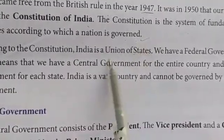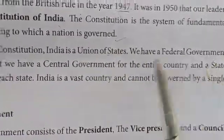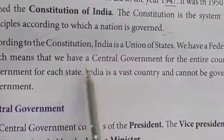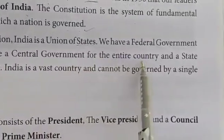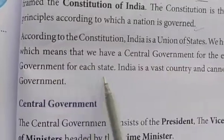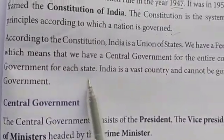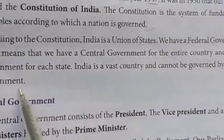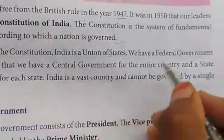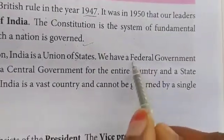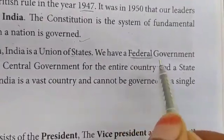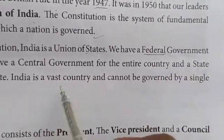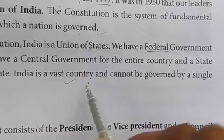We have 29 states. We have a federal government, which means that we have a central government for the entire country and a state government for each state. India is a vast country and cannot be governed by a single government. Our country's government is called a federal government.